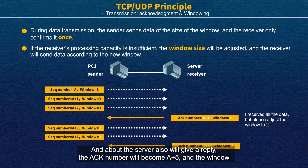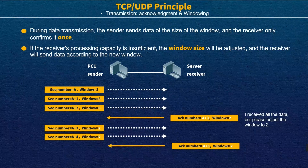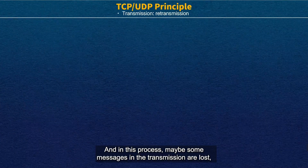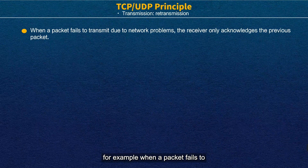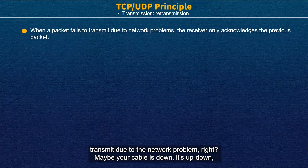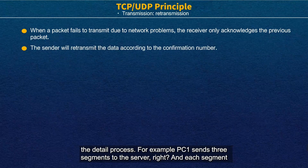The server will also give a reply with ACK number A+5 and window size 2. If the server's resources are enough, it may change the window back to 3. In this process, some messages in the network may go missing — for example, when a packet fails to transmit due to a network problem, like a cable going up and down, some messages will be discarded. The receiver then only acknowledges the previous packet.